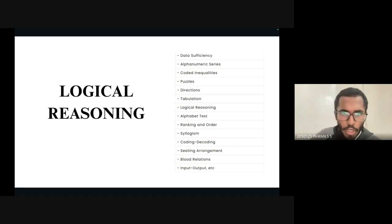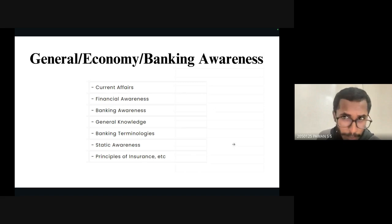Speaking about general economy and banking awareness, I suggest keeping Arihant's book—it's very good. For banking, there's a separate book I've provided in the description box. Please purchase the book and start reading. Current affairs are very useful—you should know what's happening over at least the last six months. Static GK is very important for prelims, but for mains, general GK is also important. You must have parallel knowledge in finance, banking, general knowledge, banking terminologies, static awareness, and principles of insurance.